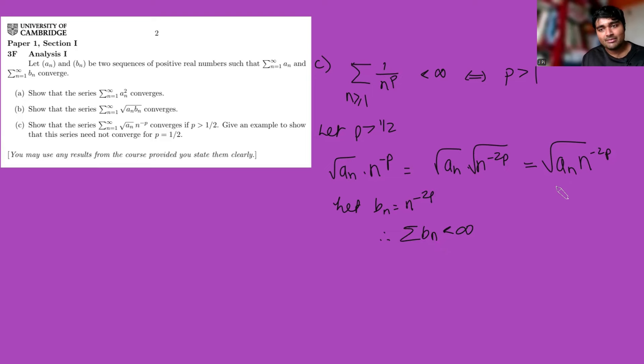This is just root a_n times n to the minus 2p. If I say let b_n equal n to the minus 2p, then because of this p-series test, if p is bigger than a half, 2p is bigger than 1, and so therefore the sum of b_n's will converge because of this p-series rule. But then we have the sum of b_n is less than infinity, so we can just apply part B. We can apply what we just proved in part B, and so therefore the sum of this guy will converge. That's exactly the same as the sum of root a_n times n to the minus p, so that does indeed converge.